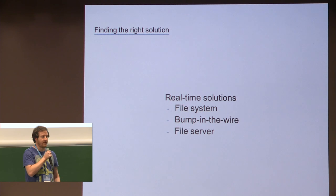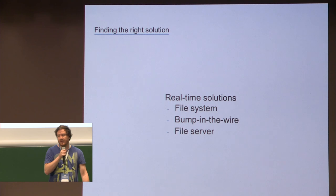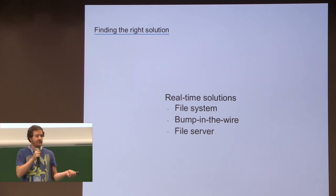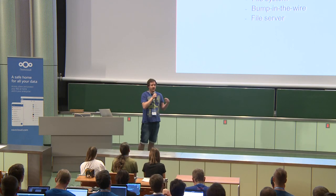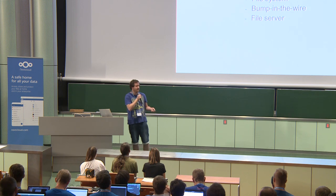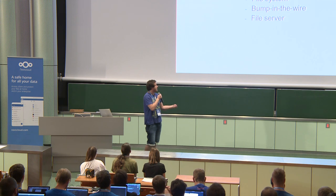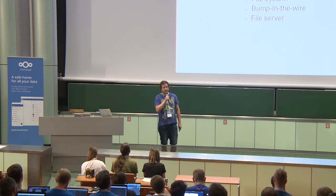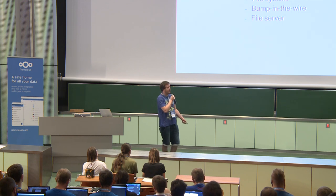At first, as we started our project, we thought about solving this problem in real-time, with real-time detection, protection, and recovery. We first tried to implement this as a file system driver, but we noticed that our analysis does not have enough time to gather enough information to recover the files — information we need to reduce false positives, because false positives lead to false recoveries and false notifications of the user, which can be really annoying. The bump-in-the-wire approach, which we tackled next, produced the same results: not enough time to perform our analysis.